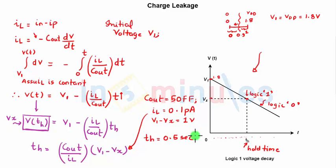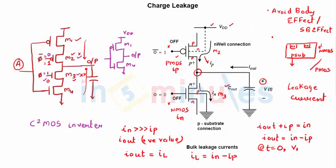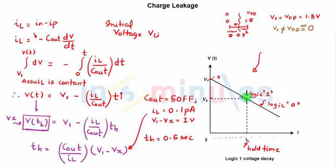Before moving on, consider the case where the initial value V1 was 0 instead of VDD. Going back to the circuit, if the output was initially 0, the leakage currents would charge it up, causing the voltage to rise. At some point the zero value is also lost. This is analogous to what we showed for the logic-high case, where a high value degrades due to leakage.